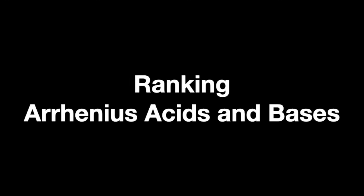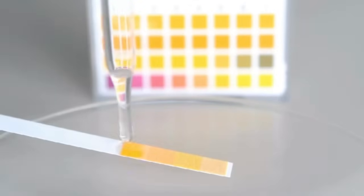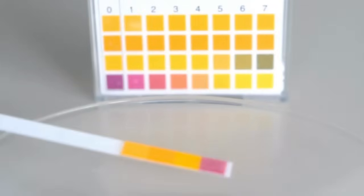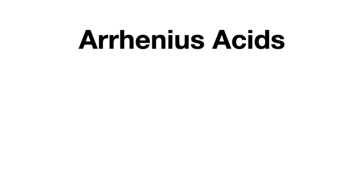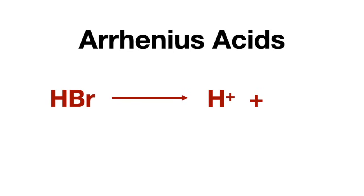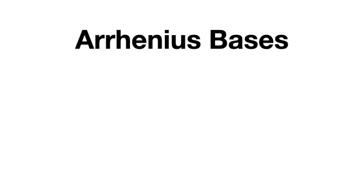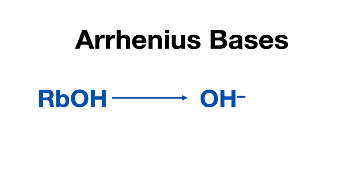For questions that ask you to rank Arrhenius acids or Arrhenius bases, I want to show you a trick to help you do that quickly and easily every time. Arrhenius acids are acidic compounds that break their bonds to hydrogens, releasing protons or positively charged hydrogens into solution, creating an acidic solution. Arrhenius bases are basic compounds that break their bonds to hydroxides, releasing negatively charged hydroxide ions in solution, creating a basic solution.